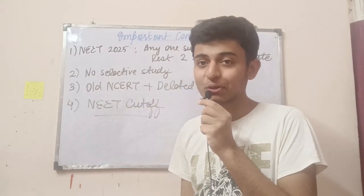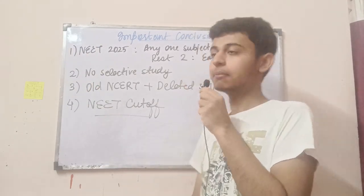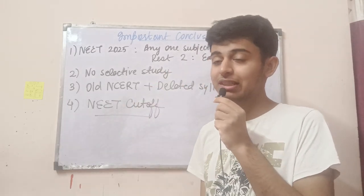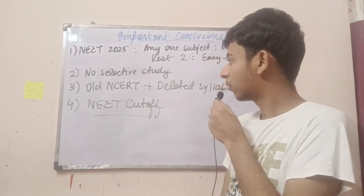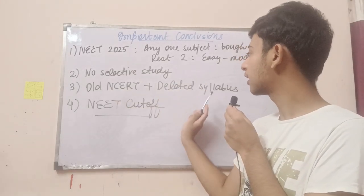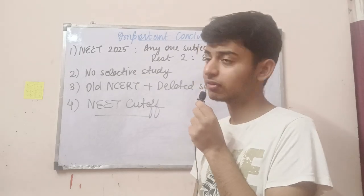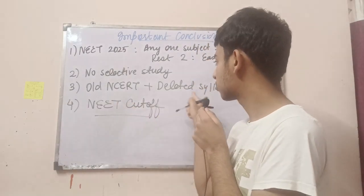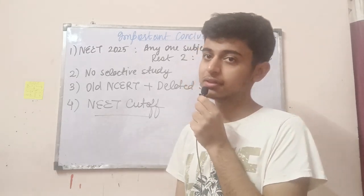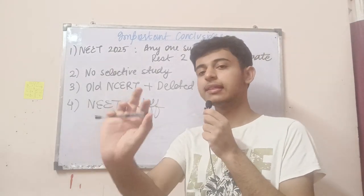A very important conclusion: no selective study. Selective study — meaning studying only the most important topics and leaving the rest — is dangerous. This time NTA gave questions from the least important topics: magnetism and matter had around three to four questions for the first time in years. Questions were asked on polarization, rolling motion, and alpha/beta decay — which are from the old NCERT and even deleted syllabus. NTA is still asking from old NCERT, especially in anatomy and morphology of flowering plants, so please don't ignore those.